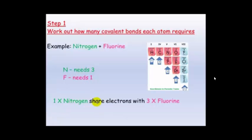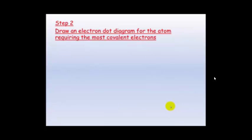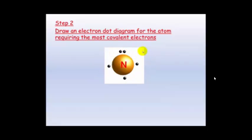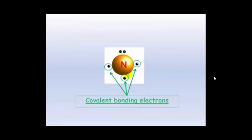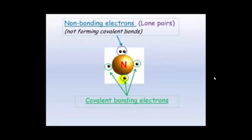So 1 nitrogen can share electrons with 3 fluorine atoms. The first thing you need to do is draw the electron dot diagram for the atom requiring the most covalent electrons. In this case this was nitrogen because it requires 3 covalent electrons — in other words it needs to share 3 electrons. And that's the 3 of them here that it will share. Of course you've got the non-bonding lone pair of electrons at the top.